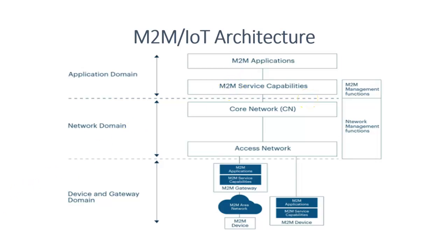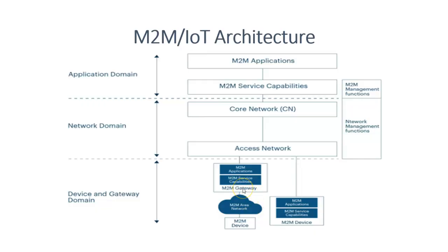The M2M IoT architecture consists of three main domains: the device and gateway domain, the network domain, and the application domain. The device and gateway domain is responsible for collecting data and communicating with the network. It consists of M2M devices, M2M area network, M2M gateway, and M2M service capabilities.